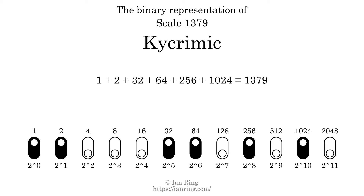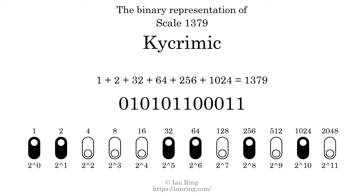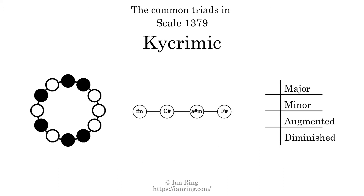The scale number not only enumerates the scale with a unique index, but it also literally describes the tonal content of the scale, represented as a binary number in base 2. The scale number is 010101100011.